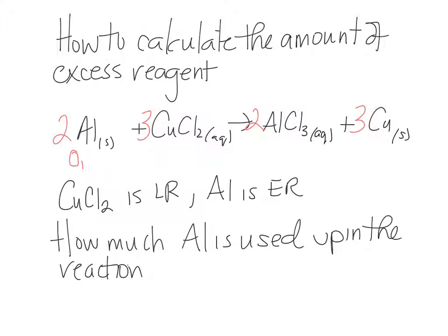Initially, we had 0.25 grams of aluminum and we had 0.51 grams of copper chloride.